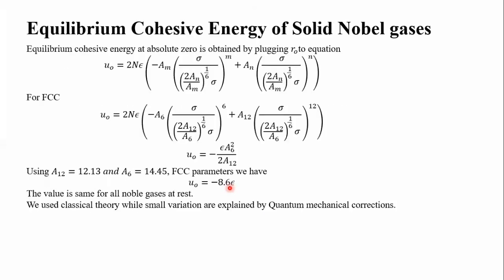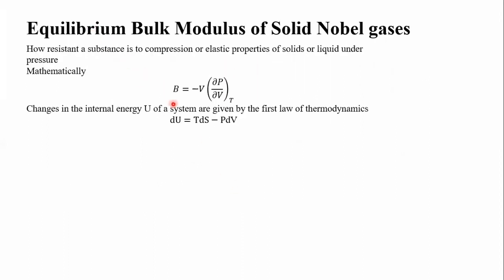So if you include quantum mechanical effects, there will be slight variations. That is all about the equilibrium cohesive energy of solids. Now, equilibrium bulk modulus — how do we calculate it? Bulk modulus describes how resistant an object is when we compress it. To what extent can it be compressed? That is the bulk modulus of that solid.